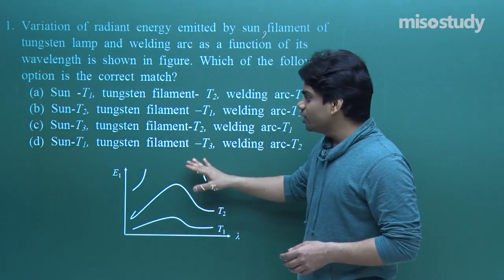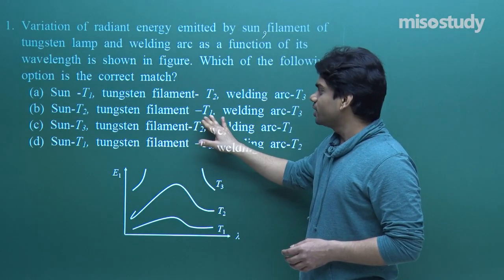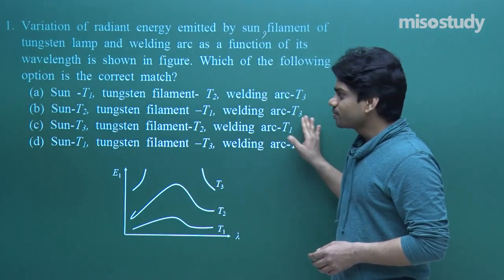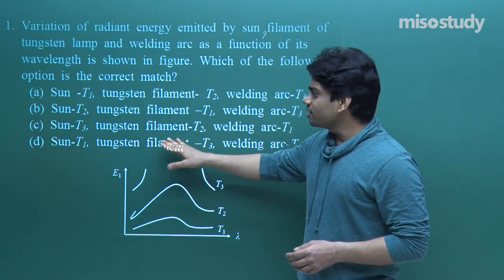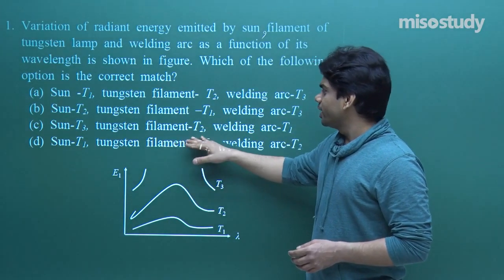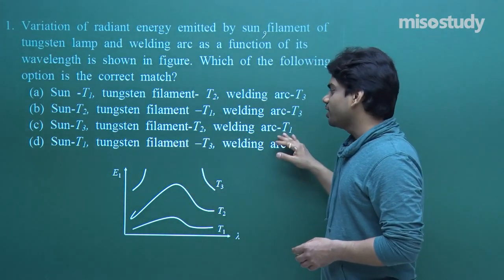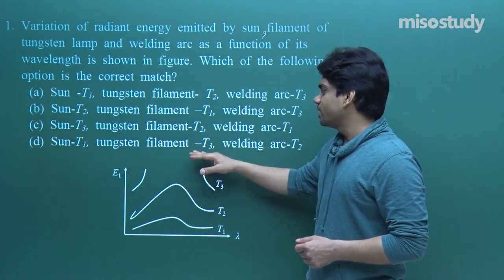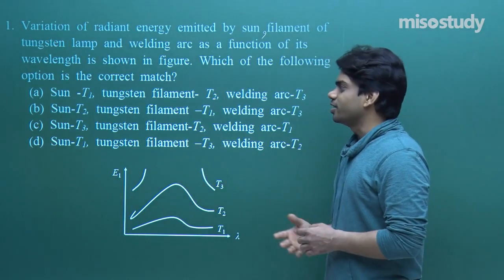Option B: sun T2, tungsten filament T1, welding arc T3. Option C: sun T3, tungsten filament T2, welding arc T1. Option D: sun T1, tungsten filament T3, welding arc T2. We need to determine which option is the right answer.